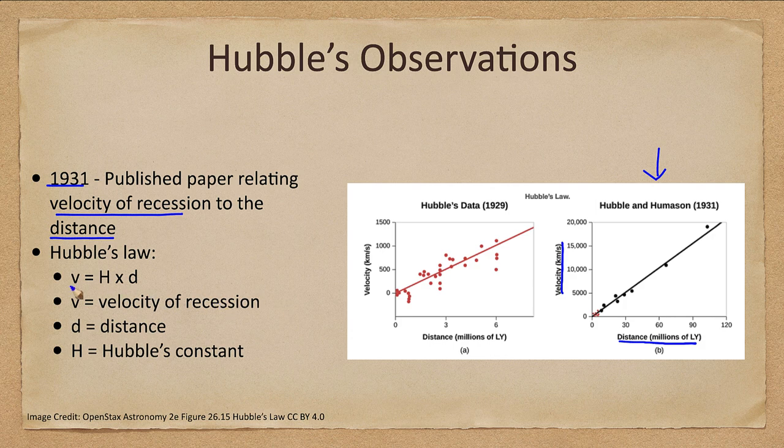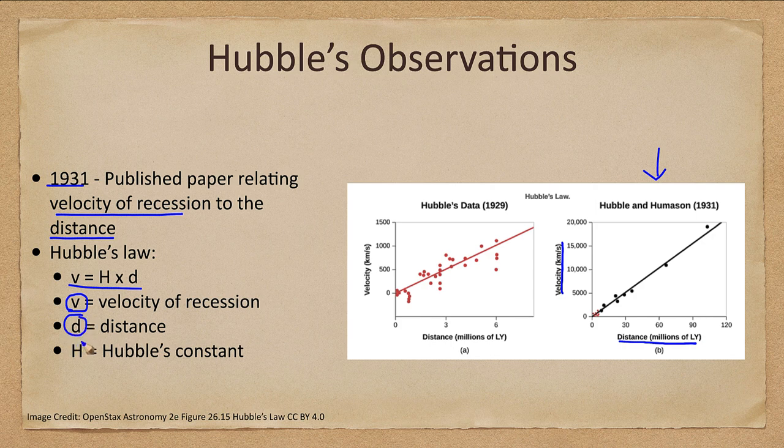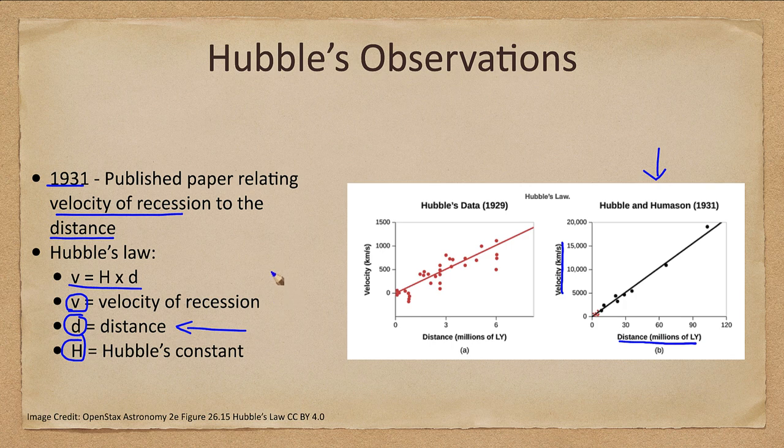That is what is given by Hubble's law which says that V equals H times D, where V is the velocity of recession, D the distance, and H is Hubble's constant. Hubble's constant would therefore be the slope of this line. And once we could determine that accurately, that allows us to find distances when we measure velocity. So we measure the velocity and we use Hubble's law to then calculate the distance.